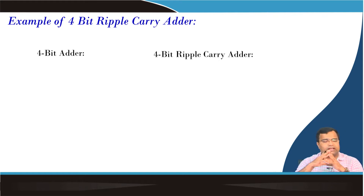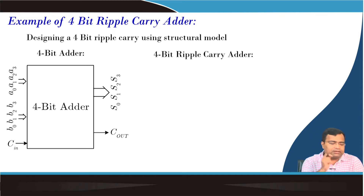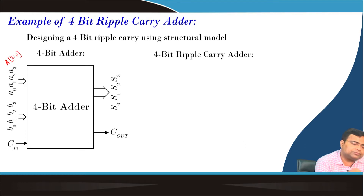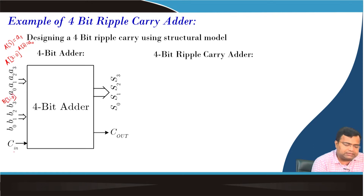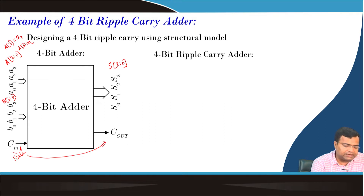Suppose we want to take an example of a 4-bit ripple carry adder, which we want to design using structural modeling. The data is 4-bit — A[3:0] where A3 is the MSB and A0 is the LSB. Similarly B[3:0] and there is a carry-in. The sum is another 4-bit number. The carry-in and carry-out are scalar signals.